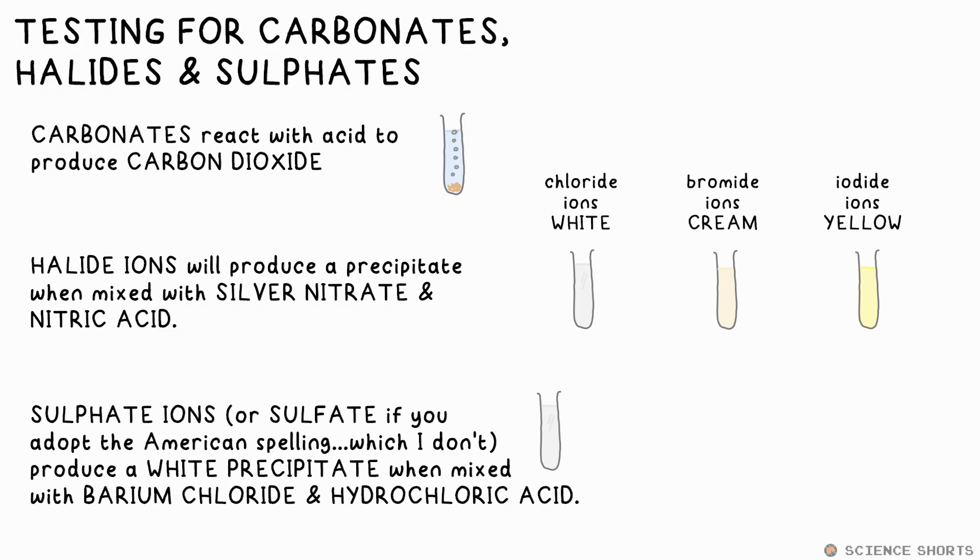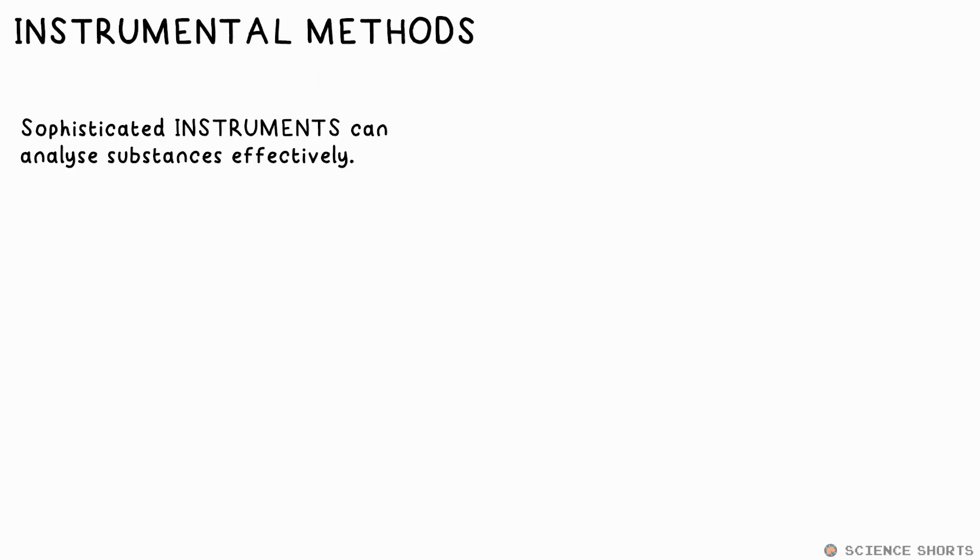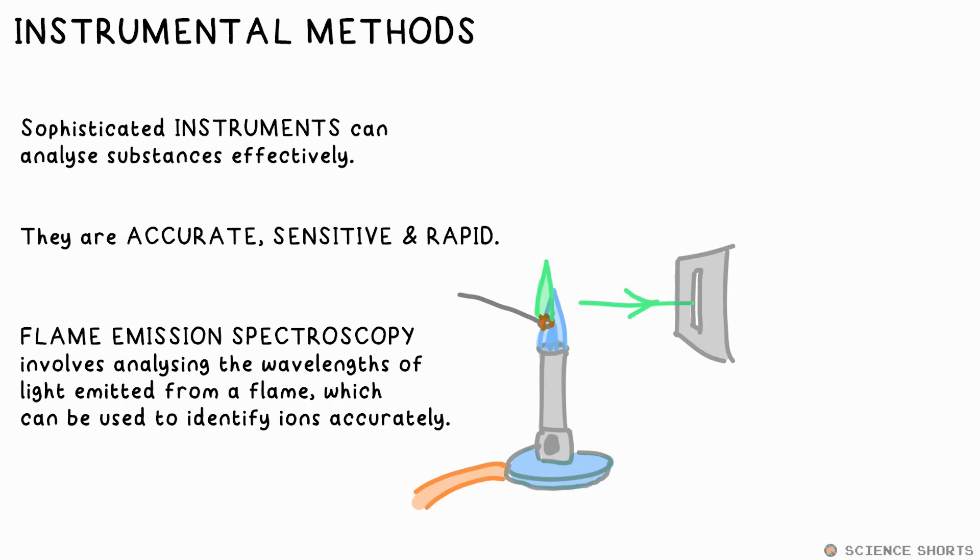In proper labs with lots of money, they use instrumental methods to determine what substances they have. These instruments are accurate, sensitive, and fast. For example, they can do flame emission spectroscopy - flame tests on steroids. The light produced by a flame is passed through a spectroscope, which can identify exactly what wavelengths are emitted, which can then be used to identify these metal ions.